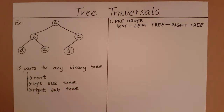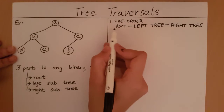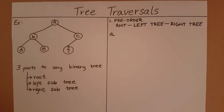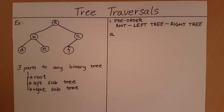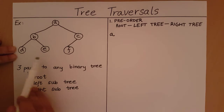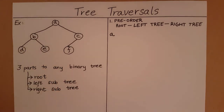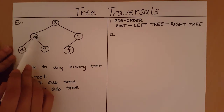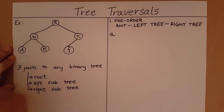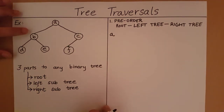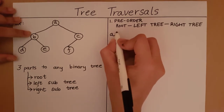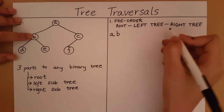Let's take our example and see what the preorder traversal of this binary tree is going to be. The first element we must traverse is the root, so we visit A. After visiting A, we must visit the left subtree of A, which is the subtree rooted at B. We will visit that left subtree in the same preorder: first the root B, then the left subtree of B, then the right subtree of B.